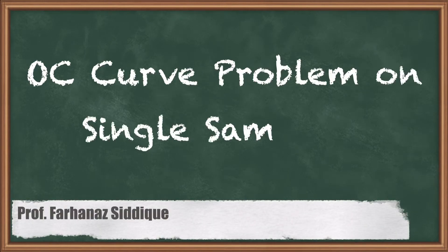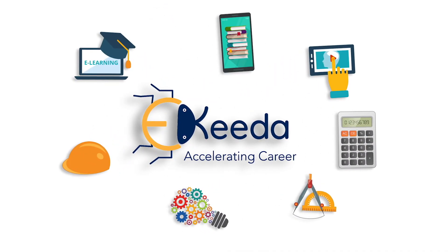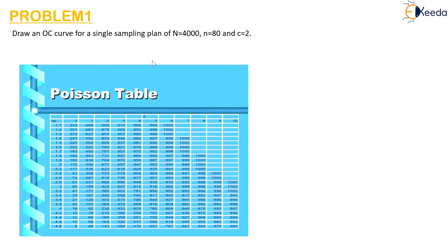Hello students. Today let us solve a problem on OC curve. They are asking us to draw an OC curve from a single sampling plan for N equal to 4000, that is the lot size, and small n is the sample size which is given as 80, and c, that is the acceptance number, is 2.